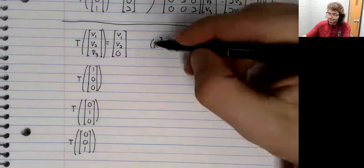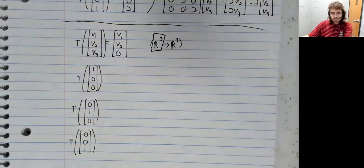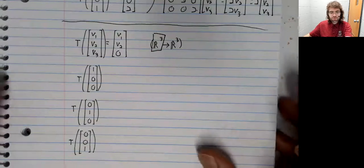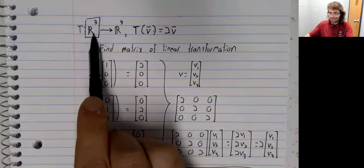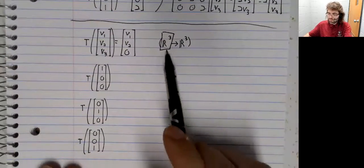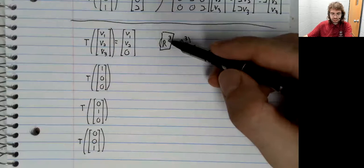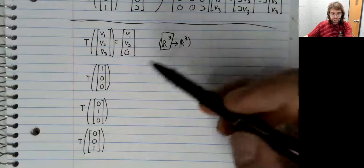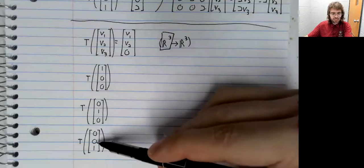It's our domain that controls which vectors we need. That's maybe a little confusing because in both these examples, our domain and our codomain have been the same. But it's because our domain is R3 that we need E1, E2, and E3.